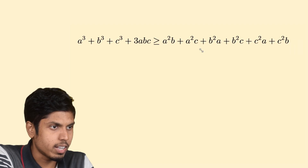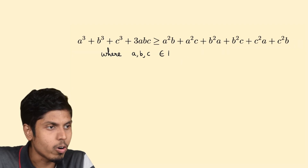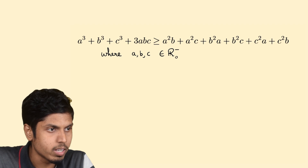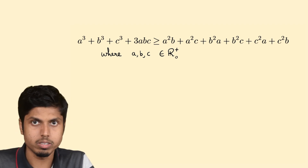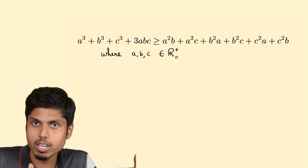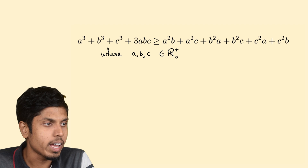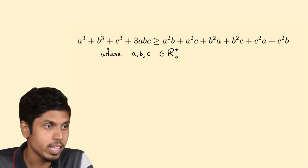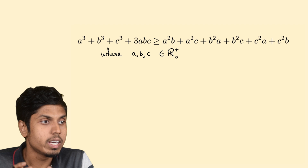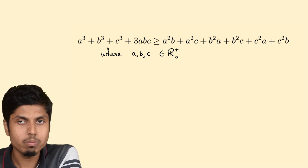Here is the question: with the condition that A, B, C are non-negative real numbers — by R₀⁺ we mean non-negative real numbers, in other words positive real numbers and 0 — I have to prove that A³ + B³ + C³ + 3ABC is greater than or equal to A²B + A²C + B²A + B²C + C²A + C²B.